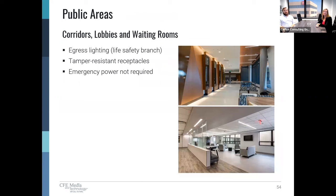The last room types we're going to talk about are public areas like corridors, lobbies, and waiting rooms. These areas require tamper resistant receptacles and all require life safety branch egress lighting. Critical power is not required for any of these spaces. However, there are some different design considerations between public corridors and patient corridors: patient corridors may have critical power for things like crash cart charging, and you may want to dim lighting in patient corridors during visiting hours to not disturb patient sleep cycles. Neither of these considerations apply in public areas.